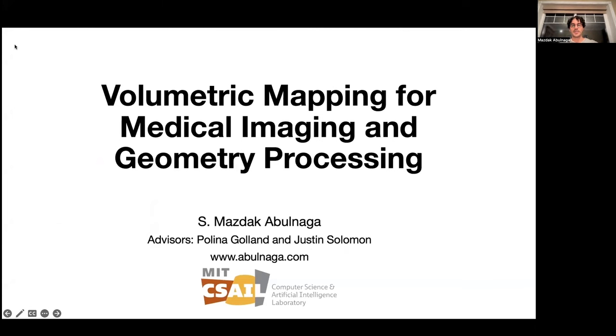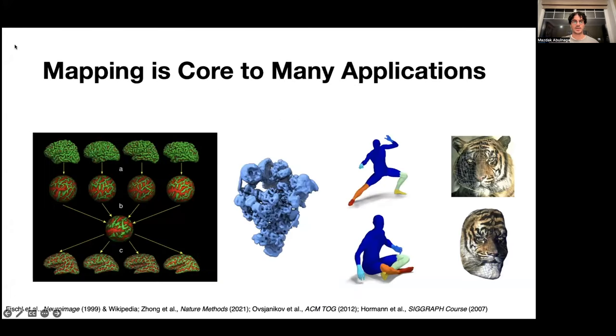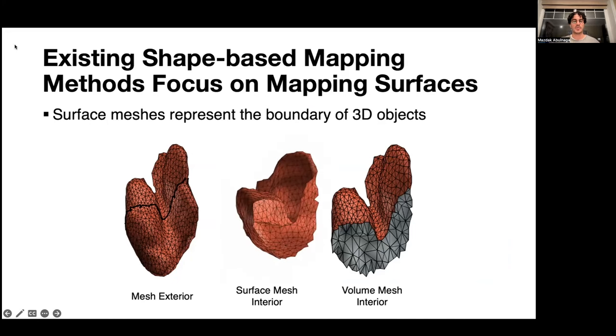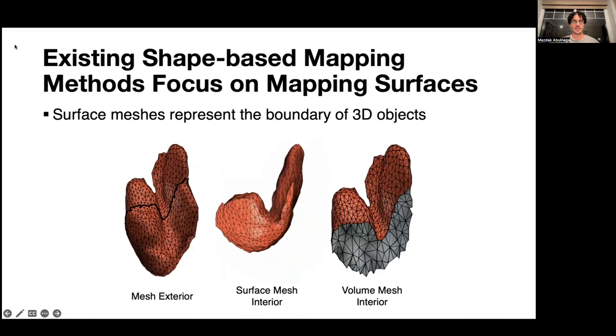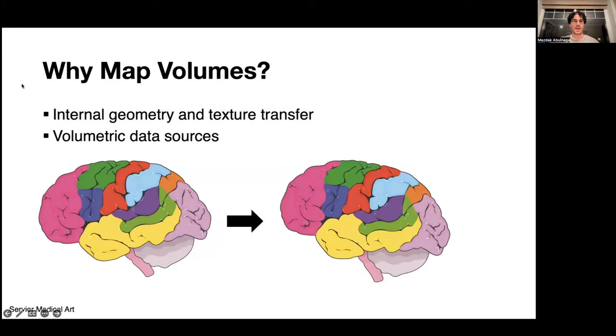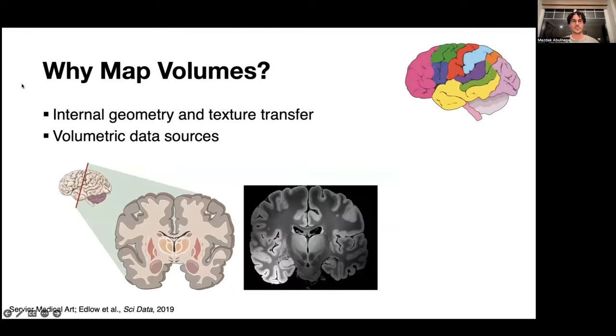Hi, I'm Maz. In my thesis, I develop methods for volumetric mapping for medical imaging and geometry processing. Mapping is core to many applications in healthcare, biology, and computer graphics. For example, to facilitate segmentation and texture transfer of 3D shapes. Despite its importance, the vast majority of existing methods focus only on mapping surfaces, which represent the boundary of 3D objects, while essentially ignoring the interior volume information. Many applications, however, require fully volumetric approaches, such as for internal geometry transfer, and for mapping volumetric data, such as from brain MRI scans.